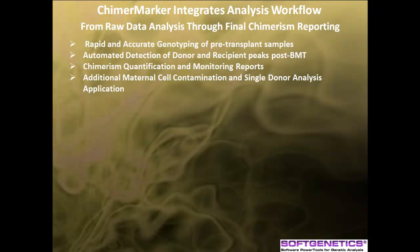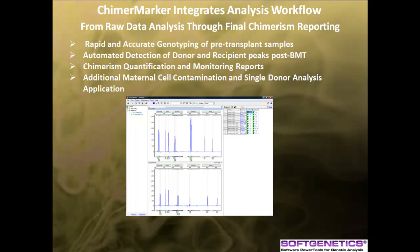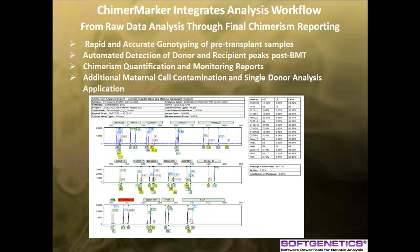ChimerMarker software integrates analysis workflow from raw data analysis to chimerism quantification and reporting. The software is compatible with all major CE instruments and human identity chemistries for rapid, accurate size and allele calls. It has a user-friendly interface and link navigation that decreases error due to data transfer, automates peak identification, and contains an audit trail when user management is activated. For chimerism analysis of post and pre-transplant samples, the software automatically detects donor and recipient peaks, and uses this information to quantify percent chimerism by height or area. The results can be displayed in percent donor or recipient in the comprehensive summary report. Additional applications include maternal cell contamination and single donor chimerism analysis. Please see a separate webinar for more information on these applications.